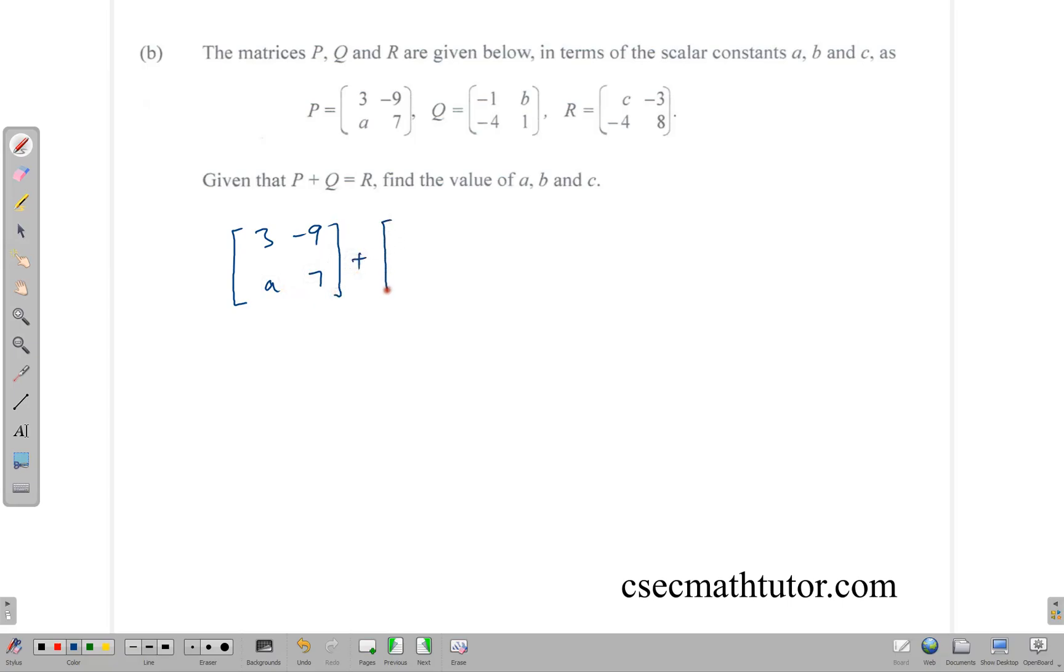Let's just write them down. This is P, which is 3, negative 9, A, 7. P plus Q, negative 1, B, negative 4, 1, is equal to R, which is C, negative 3, negative 4, 8.